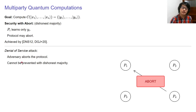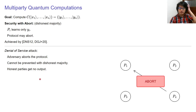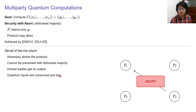It's well known that a denial-of-service attack cannot be prevented with dishonest majority. When it does happen, the honest parties get no output. But because we are working in the quantum setting, there is an additional issue: all of the quantum inputs would be consumed and lost due to the no-cloning theorem. A denial-of-service attack cannot be prevented, but we still want to ask: is there anything we can do about this?